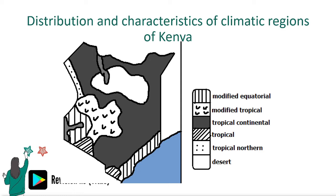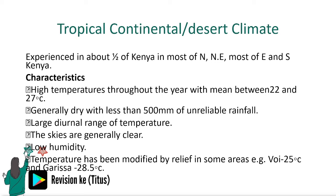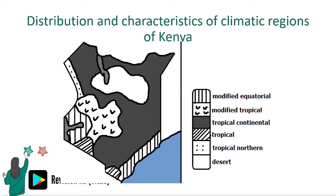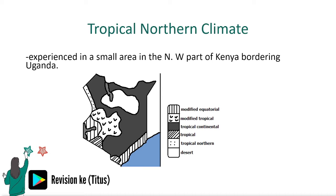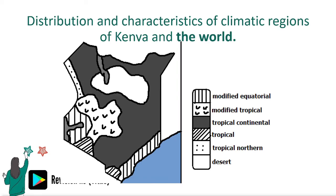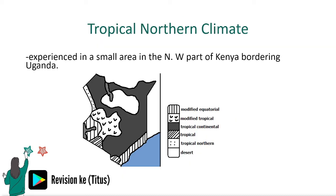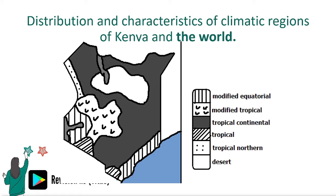The tropical continental or desert climate is experienced in about half of Kenya — most of the north and northeast, and most of eastern Kenya. We have the tropical climate experienced in the Kajiado, Taita, and Kwale regions. We also have the tropical northern climate experienced in a small area in the northwestern part of Kenya bordering Uganda. On a world scale, we have hot climates, warm climates, cool climates, very cold climates, mountain climates, and micro or local climates.